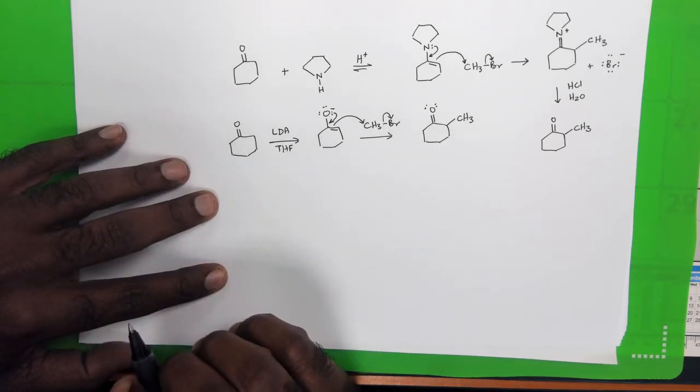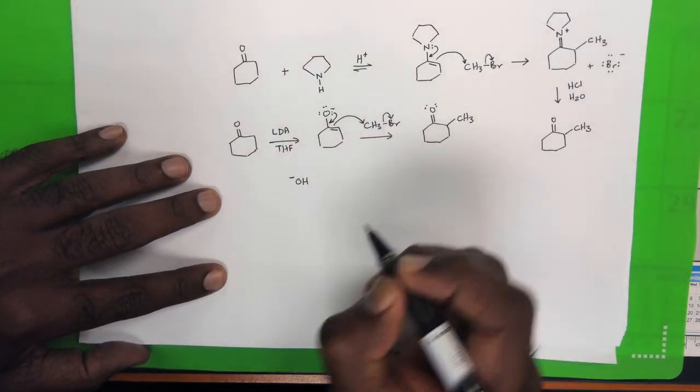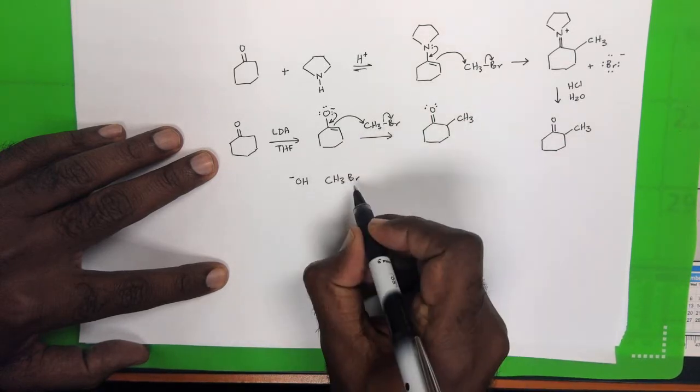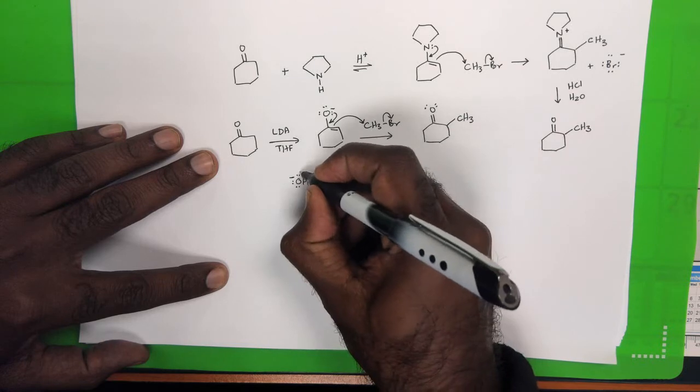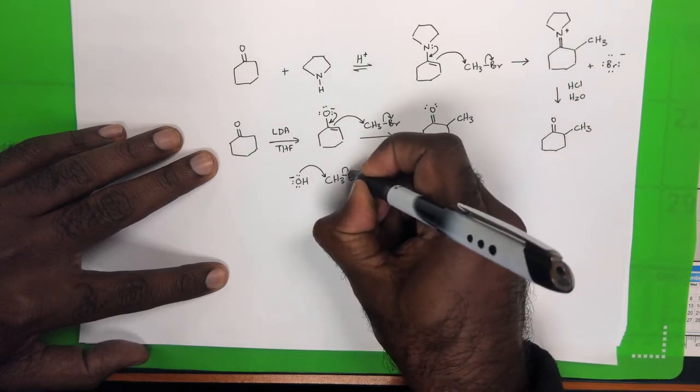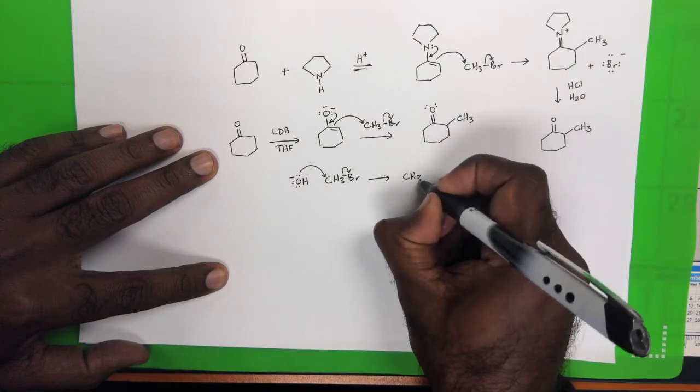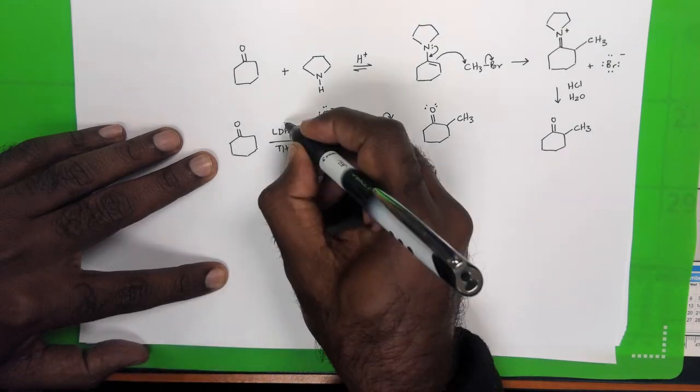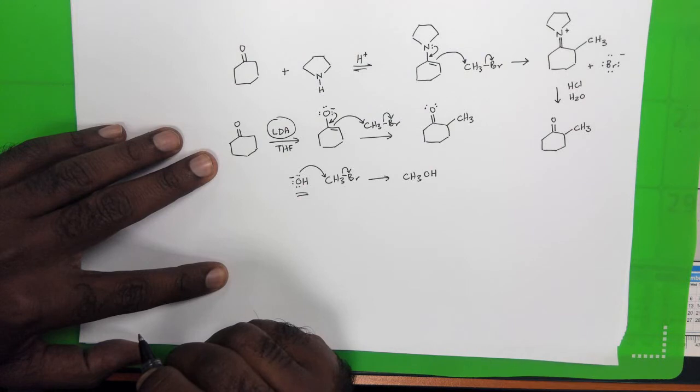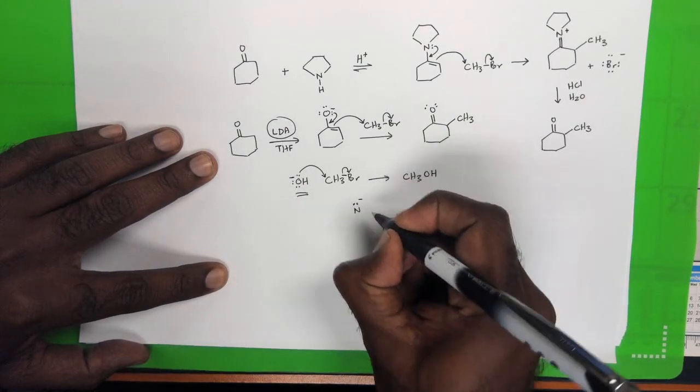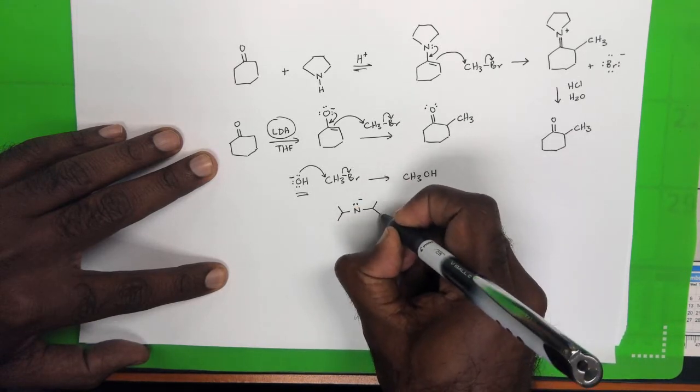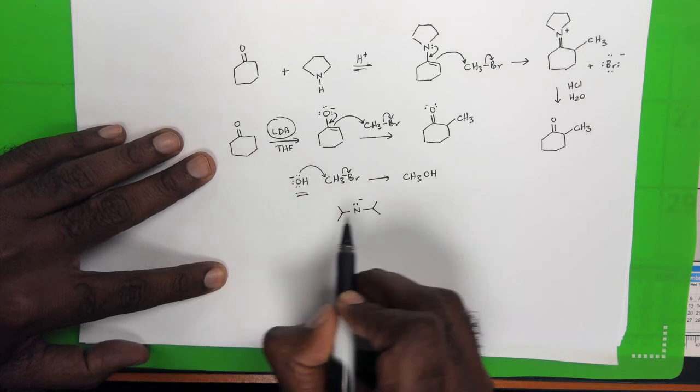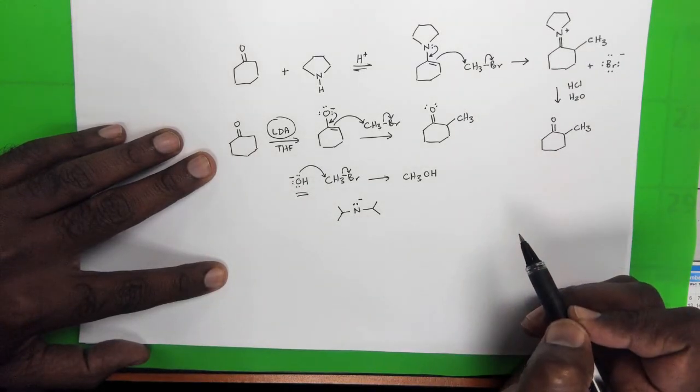Remember that we don't use a base such as hydroxide ion in this case, and the reason for that is that a side reaction would occur where methyl bromide will react with your hydroxide ion, and you would form methanol as a side product in this reaction. So we tend not to use the hydroxide base, but rather the lithium diisopropylamide base. Recall that the lithium diisopropylamide ion has this structure, and this is a bulky base, so it would take off an alpha-hydrogen rather than react directly with the carbon of the ketone.